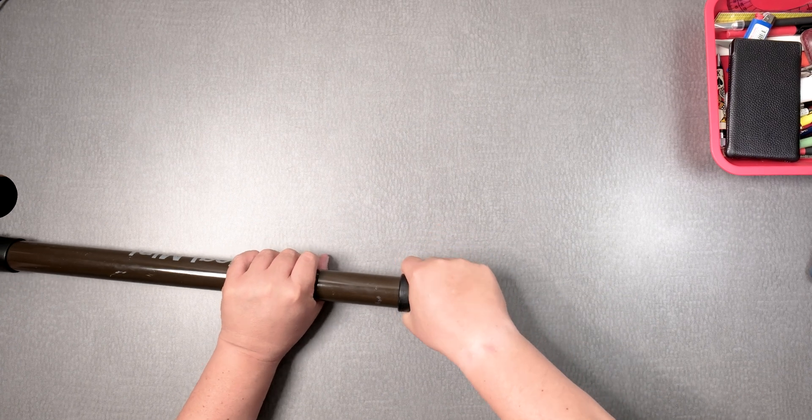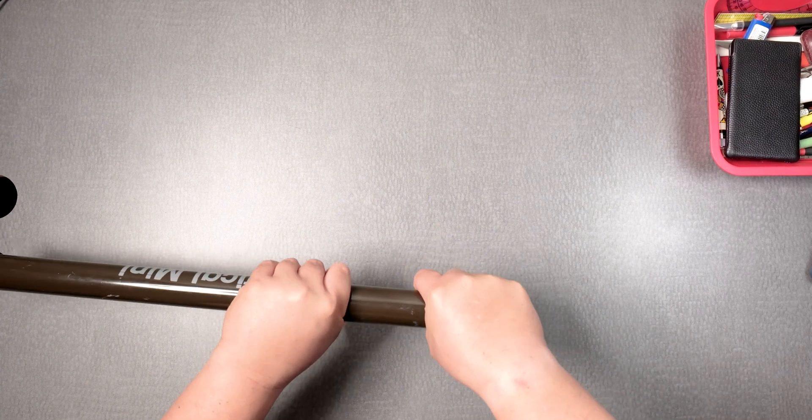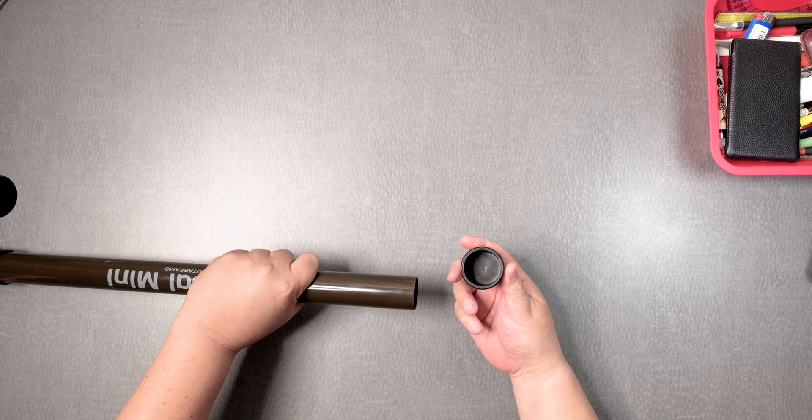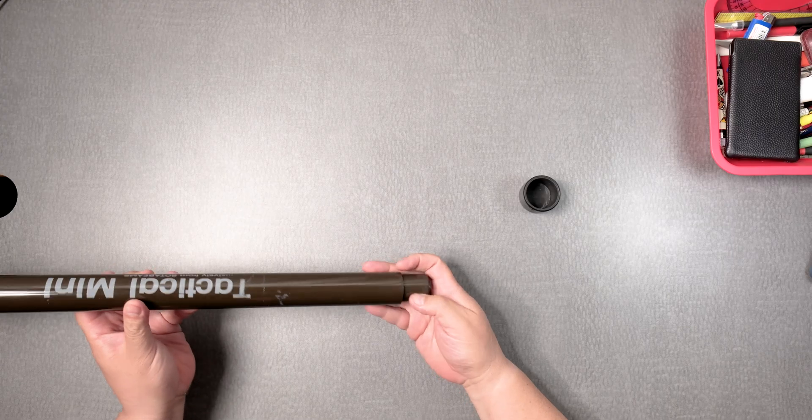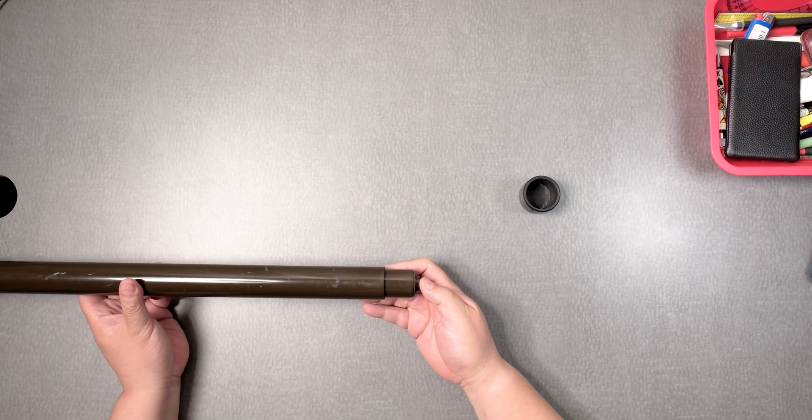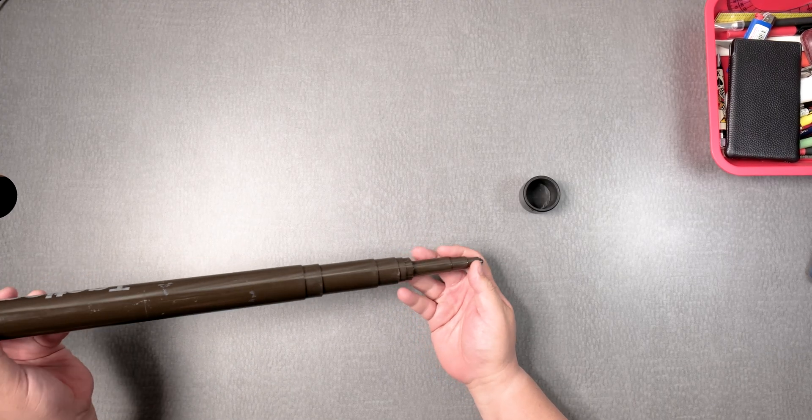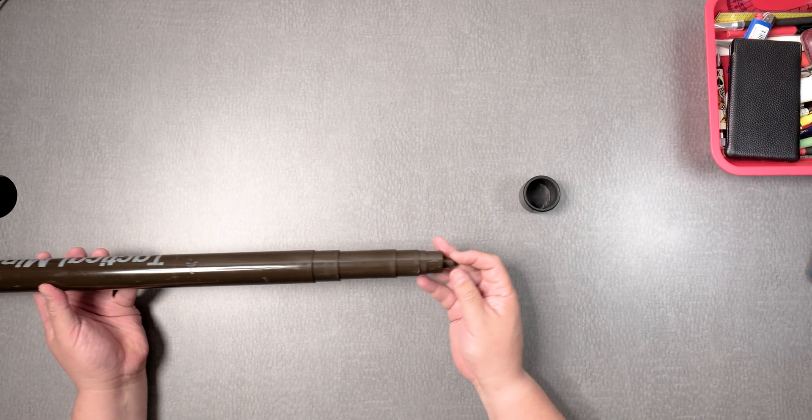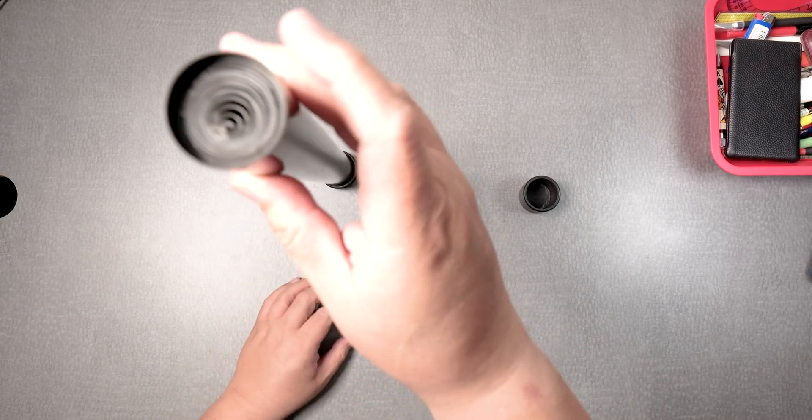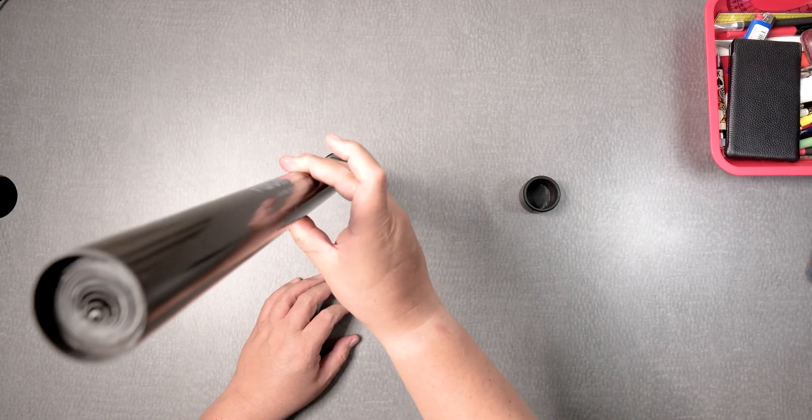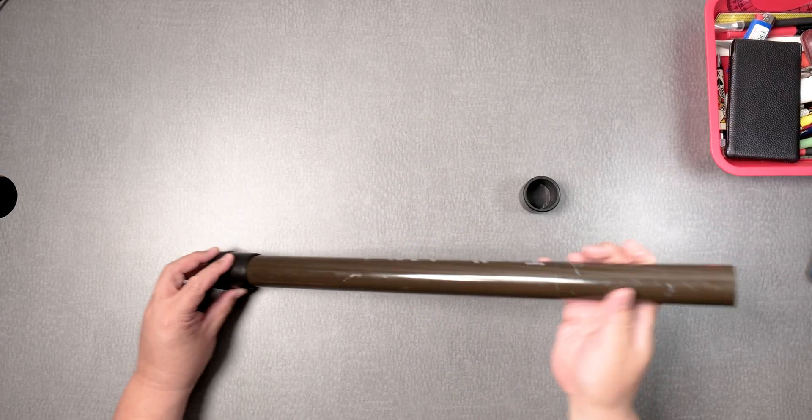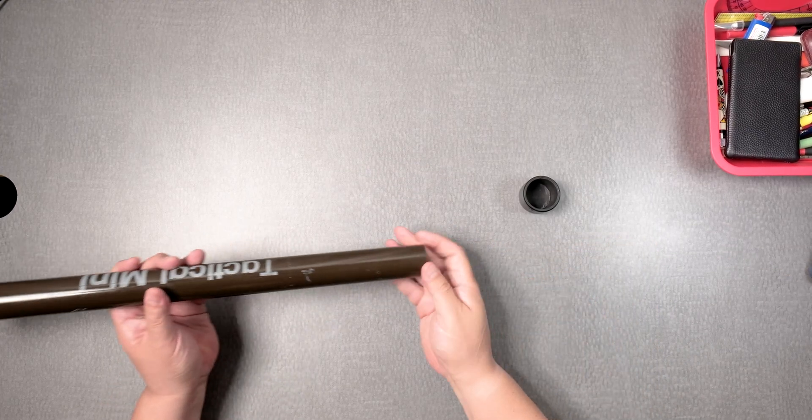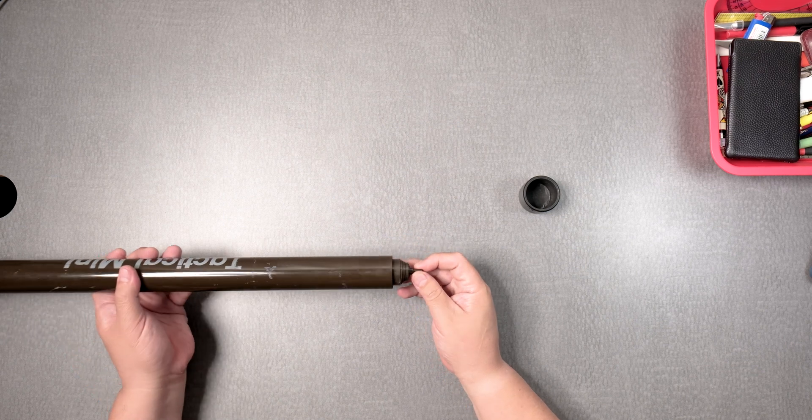To open it, you pop this out, there you go. It comes with different sections as you can see here. What you usually do is you stand it up like so and you usually have something to hold it or you can tie it.